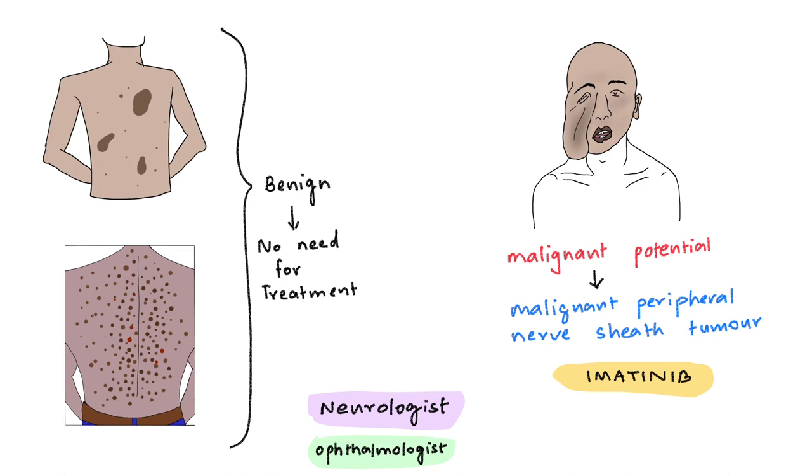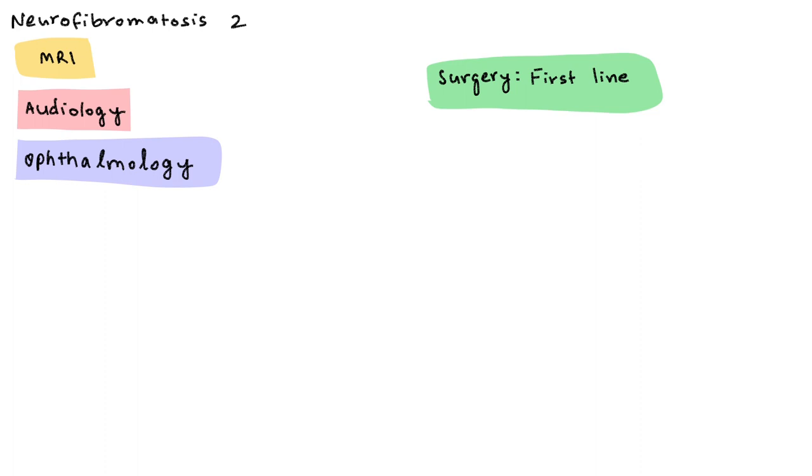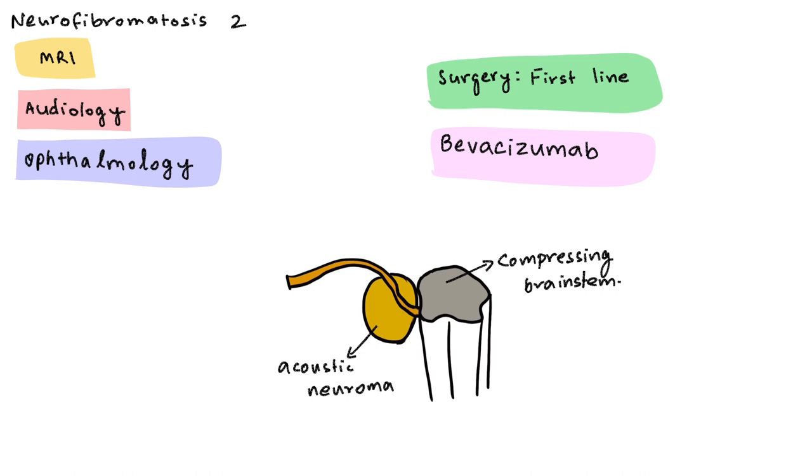For neurofibromatosis type 2, investigations like MRI, audiological assessment, and ophthalmological assessments are required. Surgery remains the first-line therapy and is especially indicated if acoustic neuroma is compressing the brainstem. Bevacizumab, a VEGF inhibitor, can be used to treat neurofibromatosis type 2 medically.